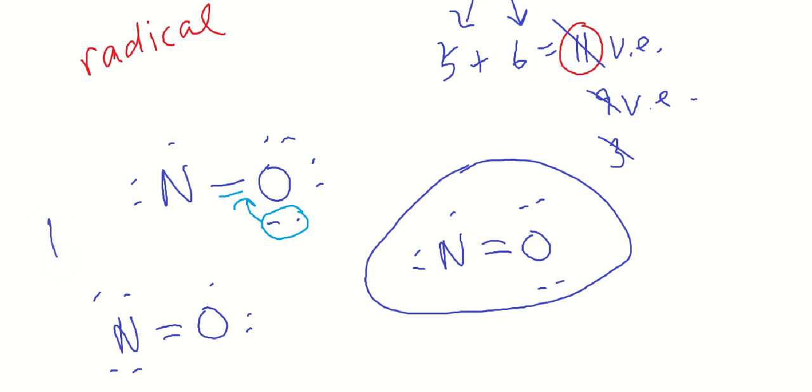If you check out the formal charge on this, you'll see that nitrogen will have a formal charge of negative one, and oxygen will have a formal charge of positive one. And we don't want charges on these atoms in a neutral molecule.